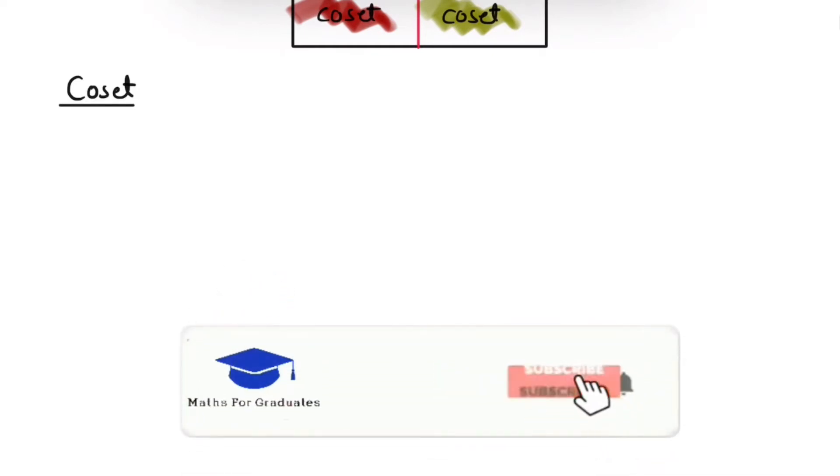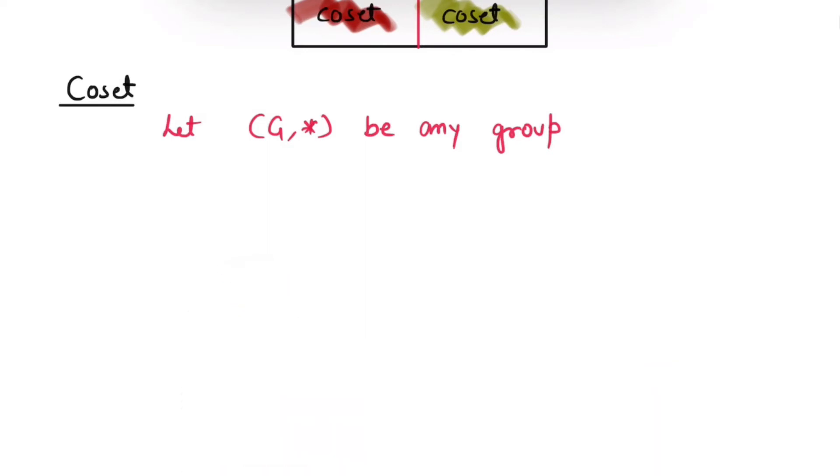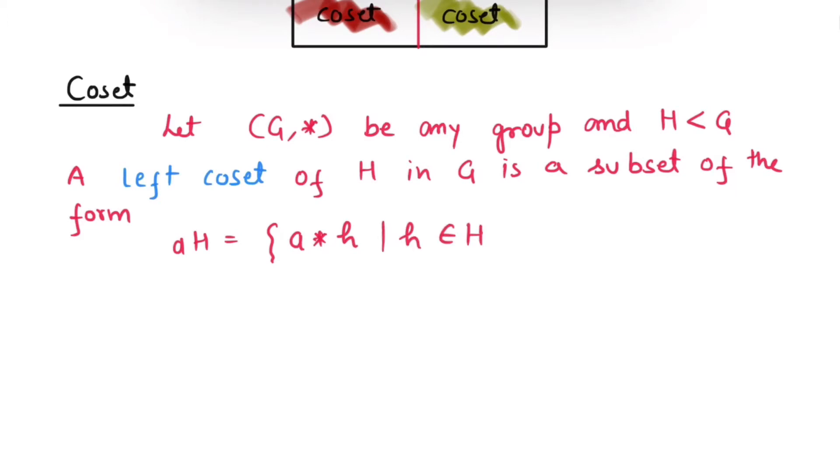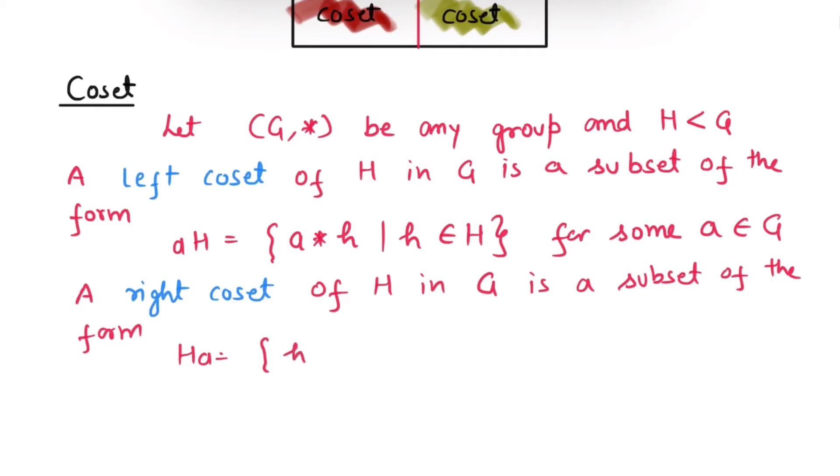Let G star be any group and H is any subgroup of G. Then, a left coset of H in G is a subset of the form AH equals to A star H where H is member of H, and A is some element of G. In the same manner, we can also write the definition for the right coset. A right coset of H in G is a subset of the form HA equals to H star A, and H is element of H and A is some element of group G.